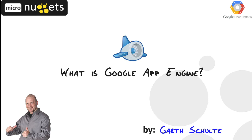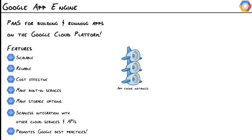What is it? What are some of the features, components, services, and languages that are supported? And why is it so awesome? We'll also look at a use case to get the big picture — how does the Google App Engine work with all the other Google Cloud Platform products, and what are some of the things that we can do with it?